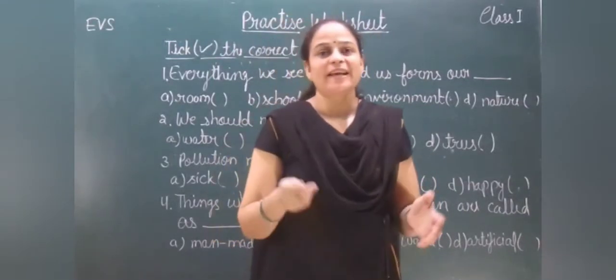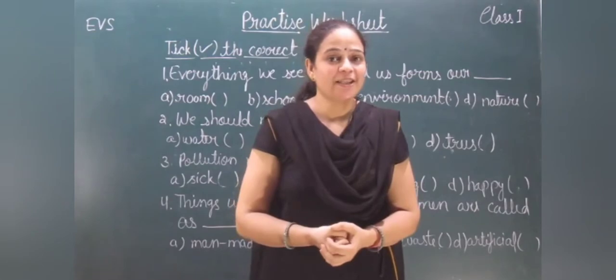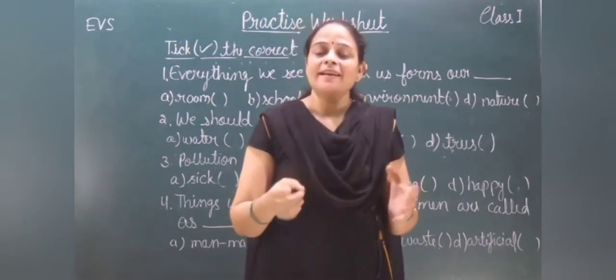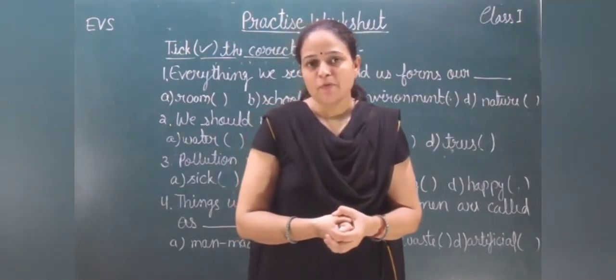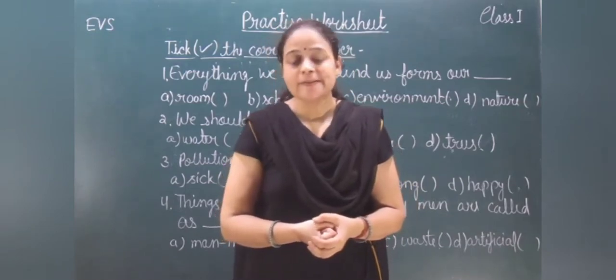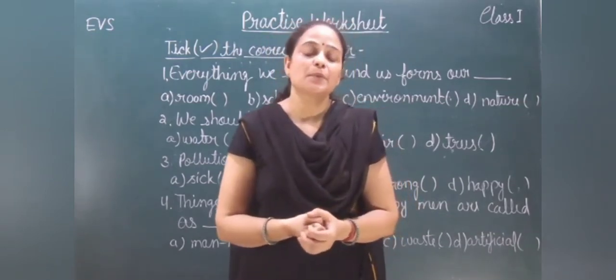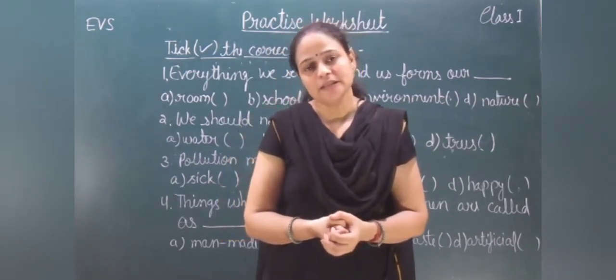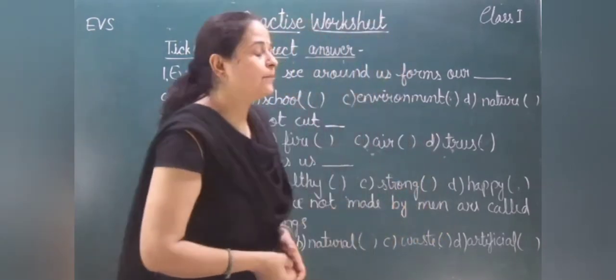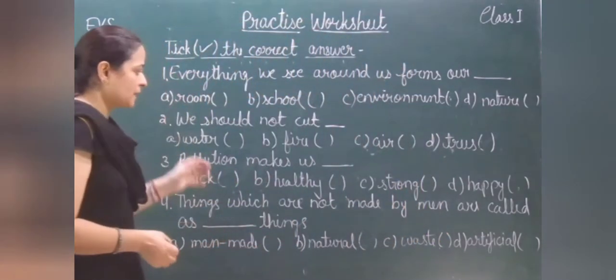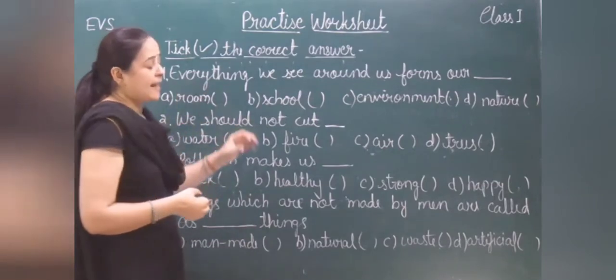Hello everyone, welcome again. As you know, we are revising these days for your exams. In our last video we revised chapter number one of EVS for class first. Today we are going to revise chapter number two, that is animals around us. So let's start revising. We have some objective questions on the board and each question has four options. We will take the correct option.